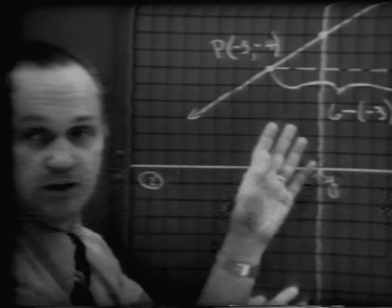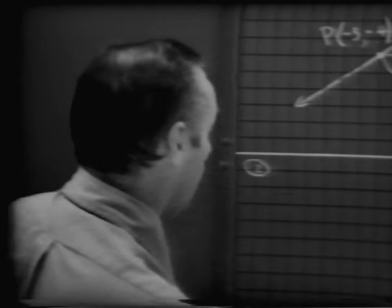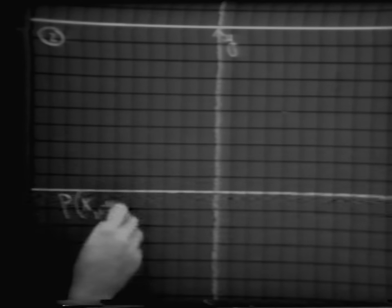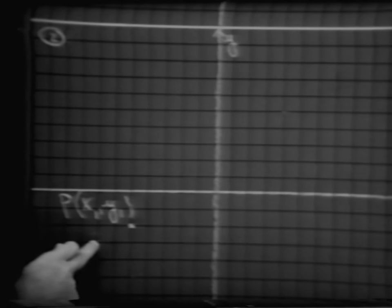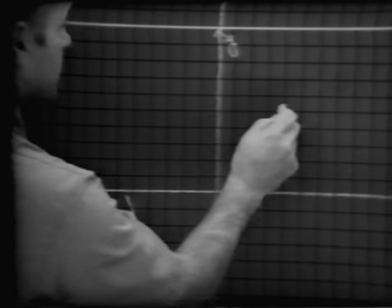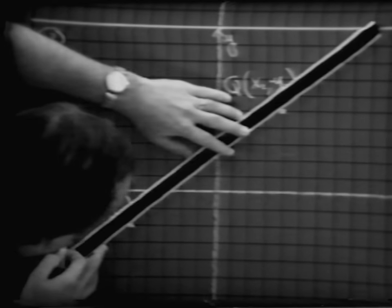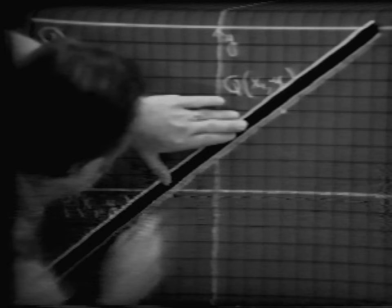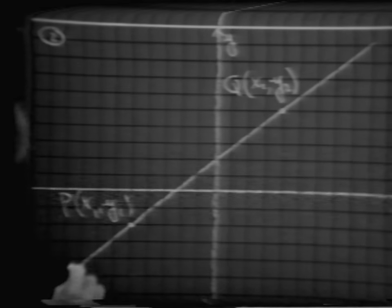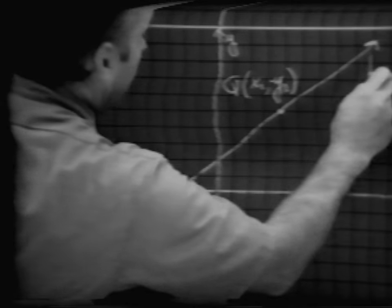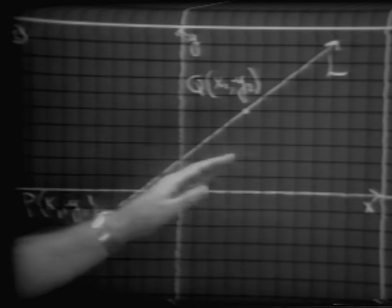Let's try to generalize this idea. Let's look at another coordinate system in which we pick out any point P with coordinates of x sub 1 comma y sub 1 — we've used the subscript notation before. And let me take some other point Q with coordinates of x sub 2 comma y sub 2. Through those two points we have a line L.